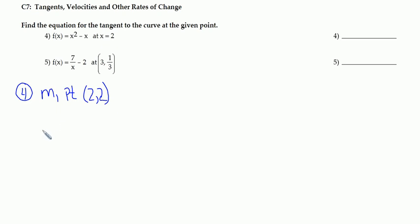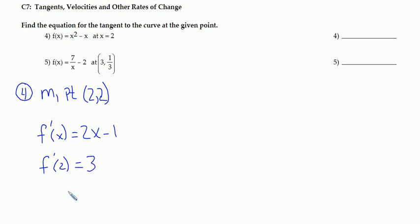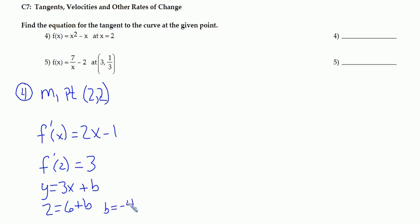Now to find the slope — I can find the slope with the derivative. So the derivative of f is 2x minus 1. At the x value of 2, I get 2 times 2, which is 4 minus 1, or 3. So I have a slope of 3 and a point of (2, 2). With slope 3, I'll have y equals 3x plus b. Plugging in (2, 2), I get 2 equals 6 plus b, so b is negative 4. My equation with a slope of 3 and a y-intercept of negative 4 is y equals 3x minus 4.